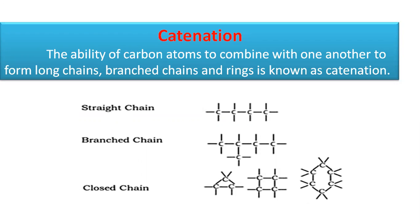Catenation is an important property shown by organic compounds. The ability of the carbon atom to combine with another carbon atom to form long chains, branched chains, and ring structures is called catenation. Due to this property, carbon forms more complex structures — straight chains, branched chains, and closed ring structures — resulting in a large number of organic compounds with different structures.